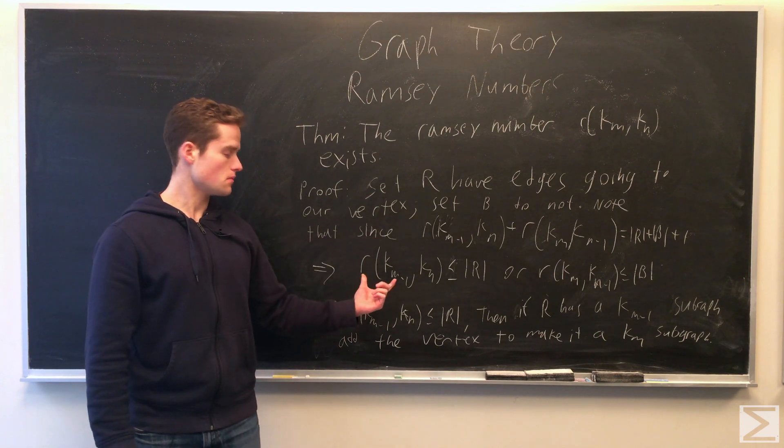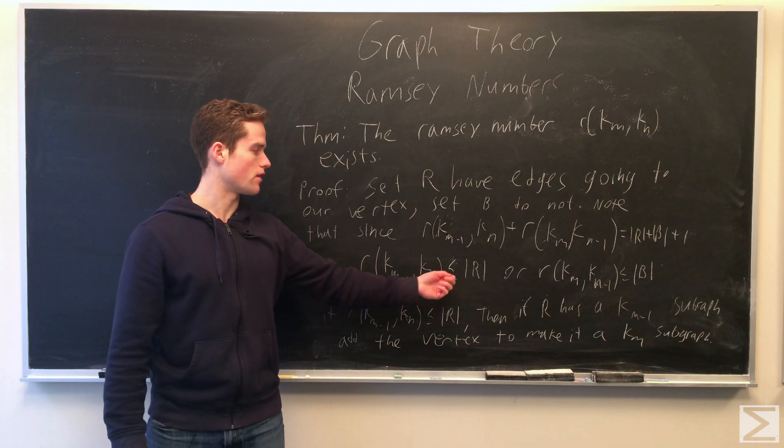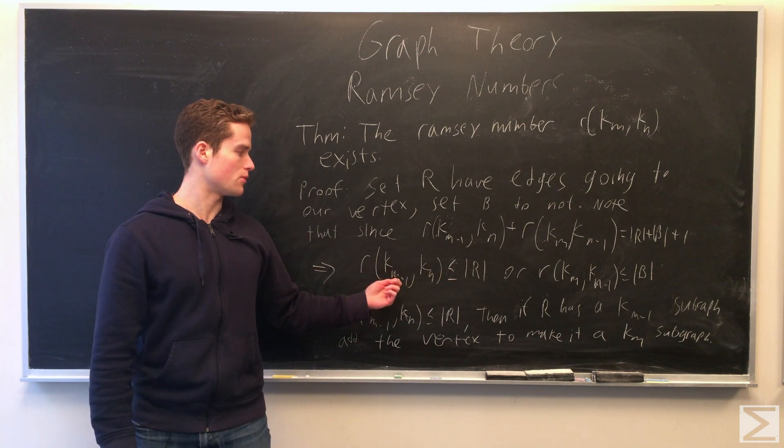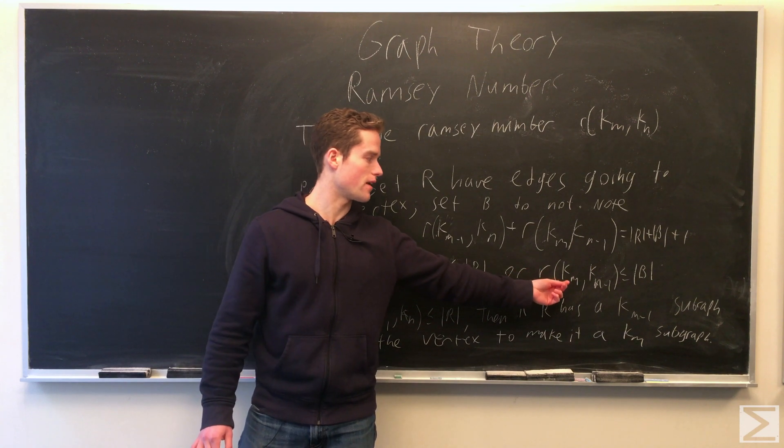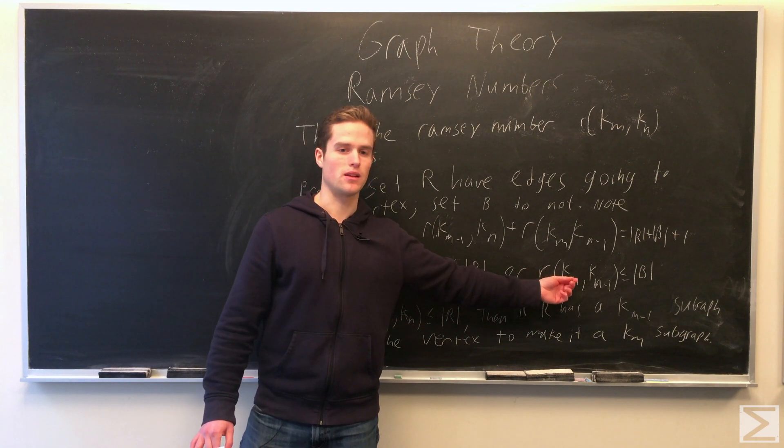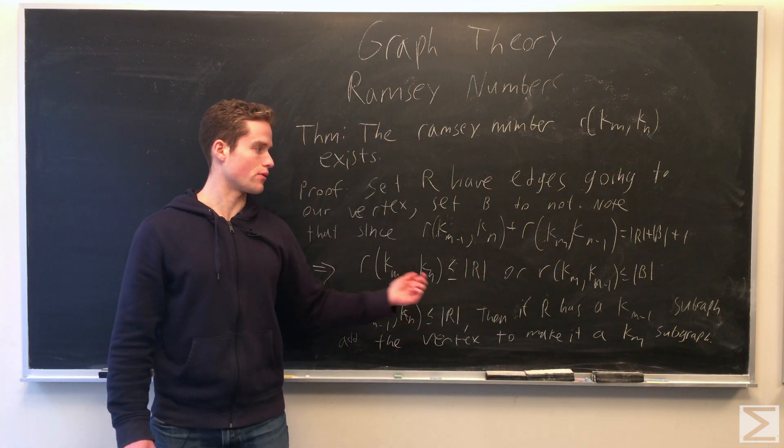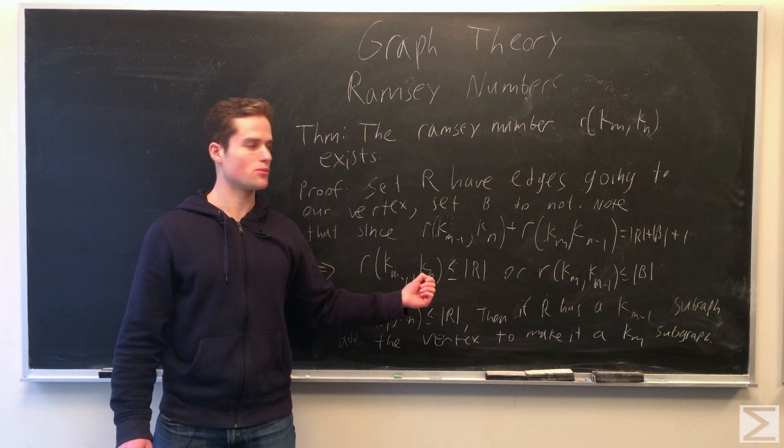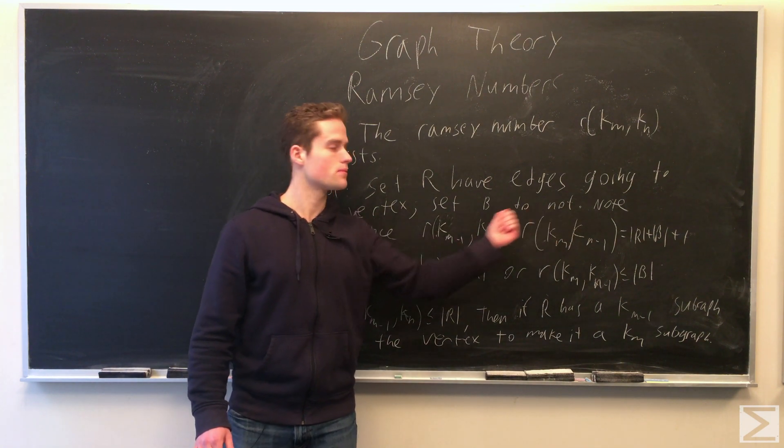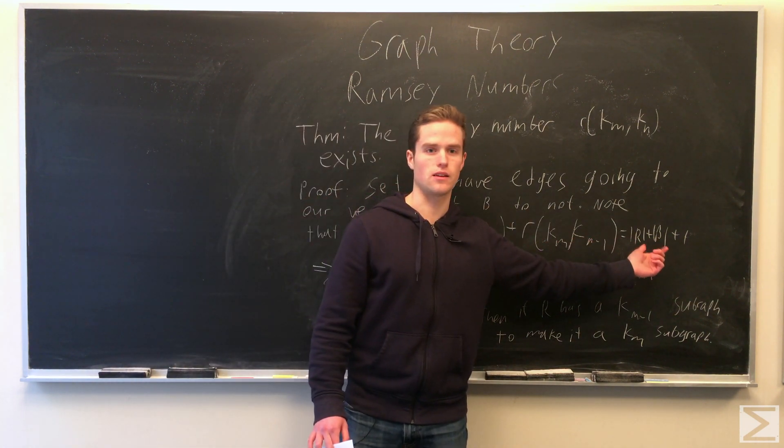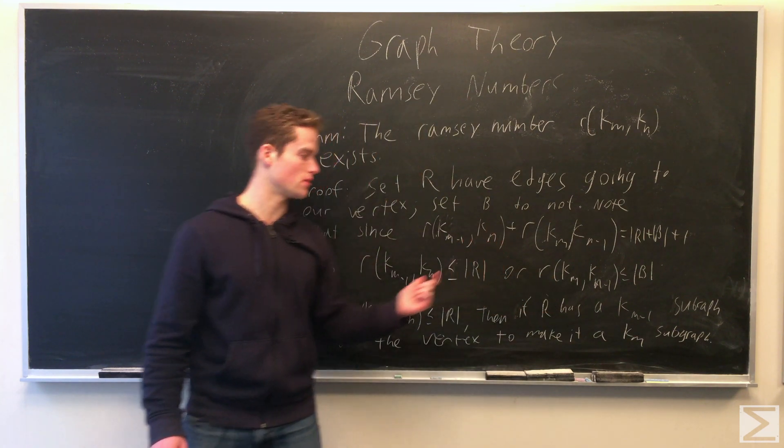So note that at least one of these must hold: the magnitude of R being greater than or equal to R(k_m minus 1, k_n), or the magnitude of B being greater than or equal to R(k_m, k_n minus 1). At least one is true because otherwise if they were both strictly less than the Ramsey numbers, the right side would be strictly less than the left, which is impossible.